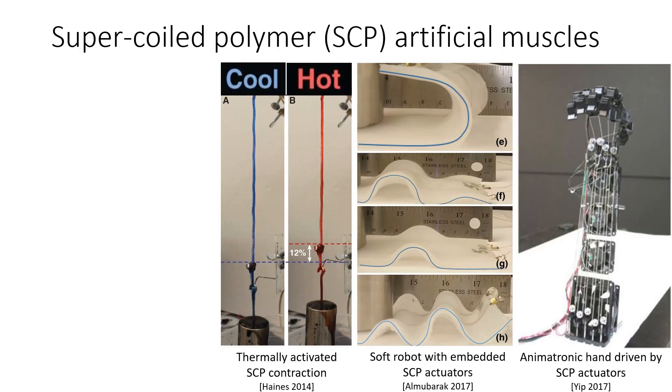Supercoiled polymer, or SCP, actuators are a relatively new class of robot artificial muscles. SCP actuators generate forces and contractions upon heating. They have demonstrated significant power-to-weight ratio, large strain capability, and good dynamic range in a thin, lightweight form factor.